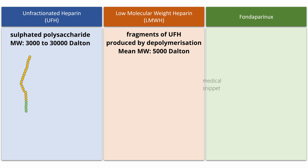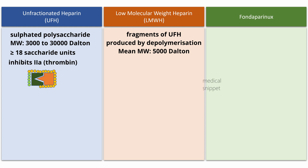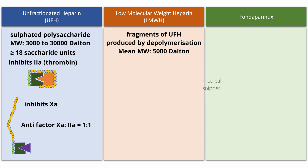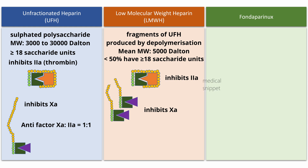Most unfractionated heparin has more than 18 saccharide units, so it inhibits thrombin by forming a ternary complex and also inhibits factor Xa in equal ratio — that is, unfractionated heparin has an anti-factor Xa to anti-factor IIa ratio of 1:1. Whereas less than 50% of low-molecular-weight heparins have at least 18 saccharide units, so low-molecular-weight heparin has greater inhibitory activity on factor Xa compared to thrombin — with anti-factor Xa to anti-factor IIa ratios between 2:1 and 4:1, depending on the length of the saccharide units. By inhibiting thrombin, heparin not only prevents fibrin formation but also inhibits thrombin-mediated activation of platelets and of factors V and VIII.